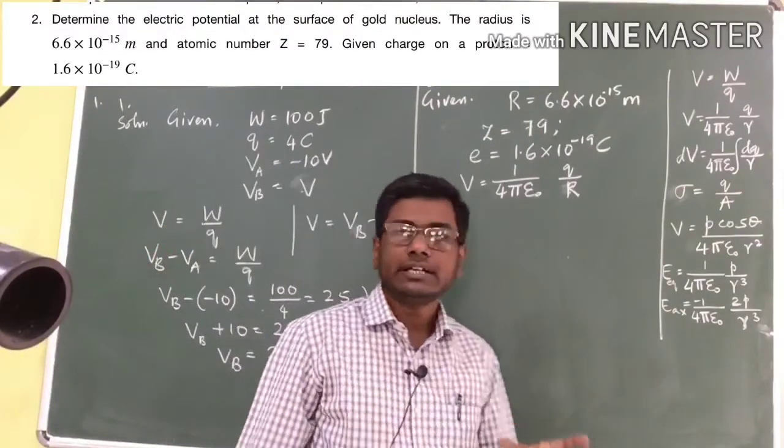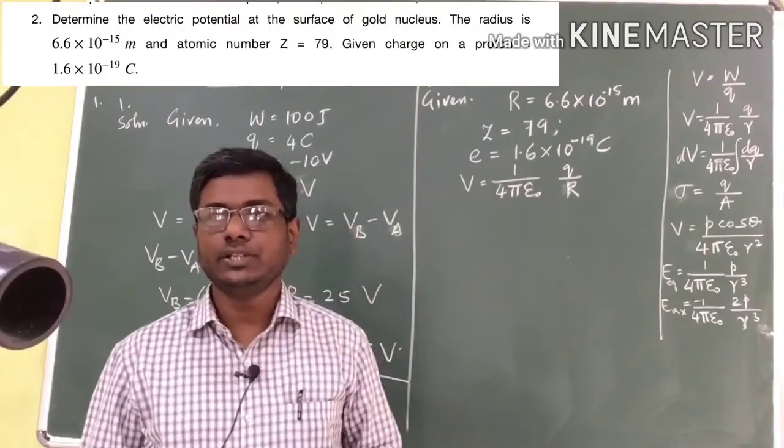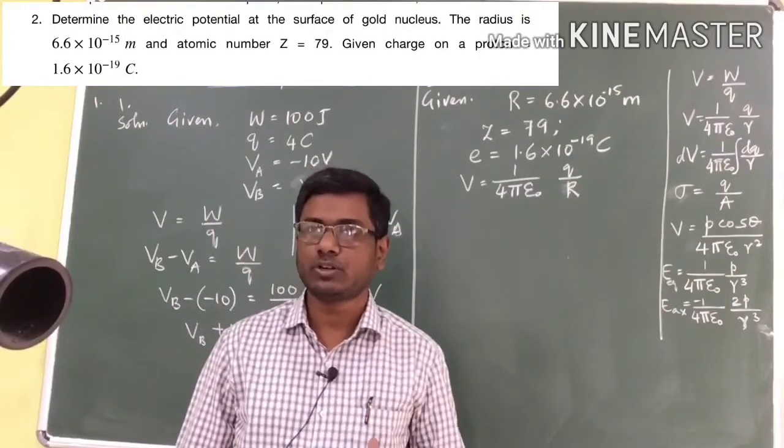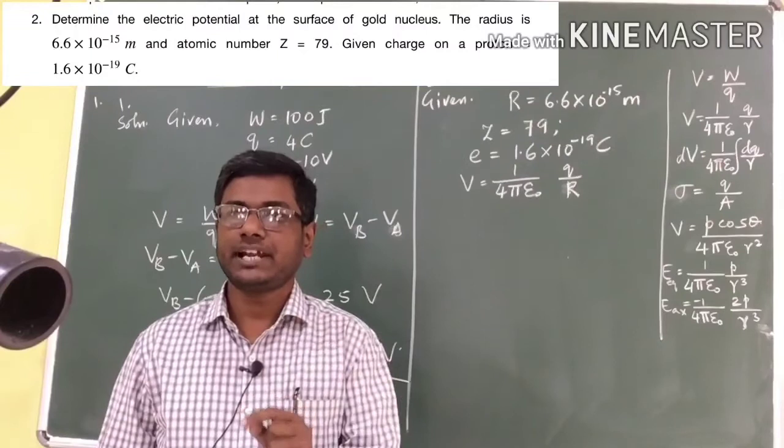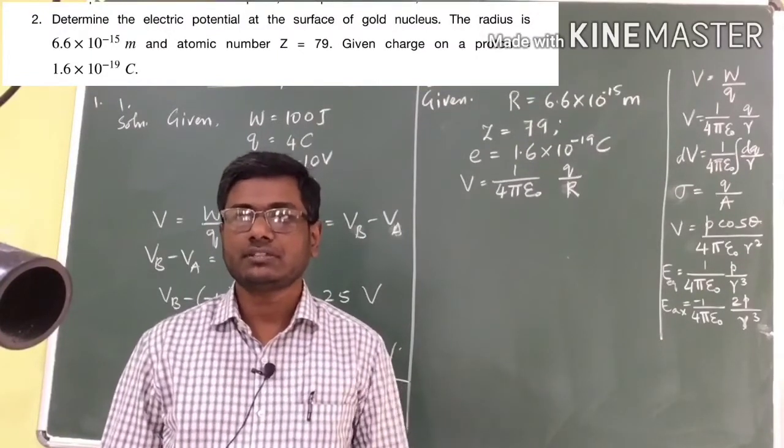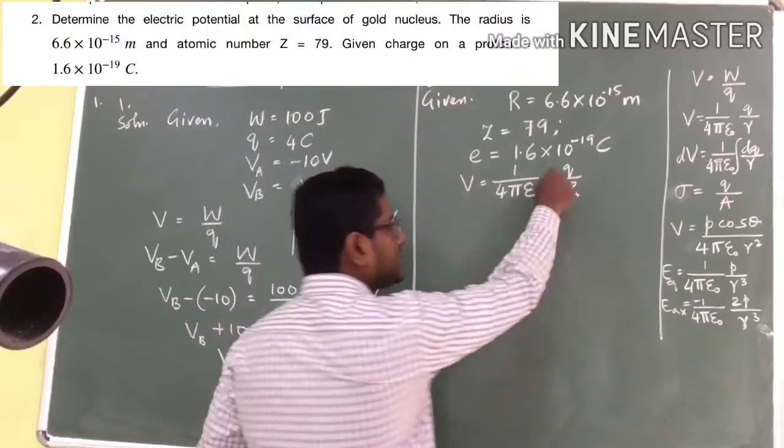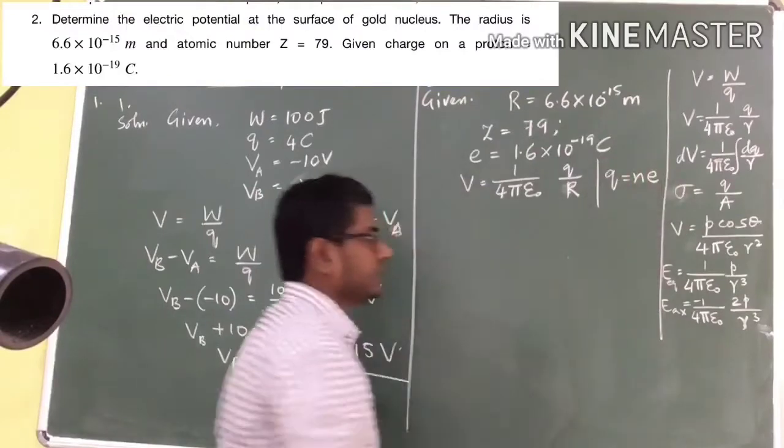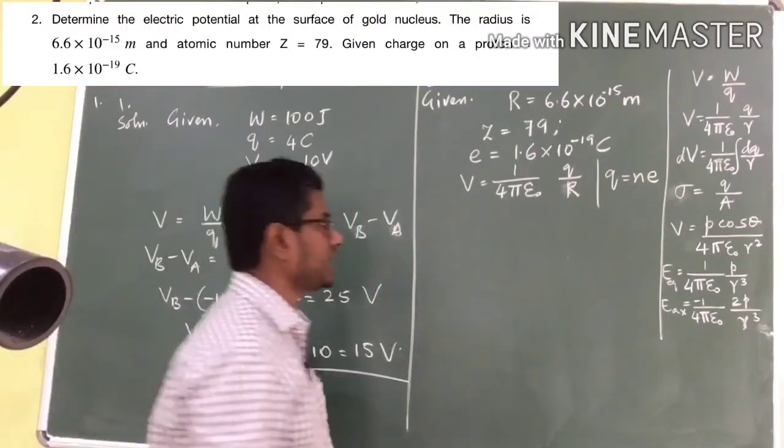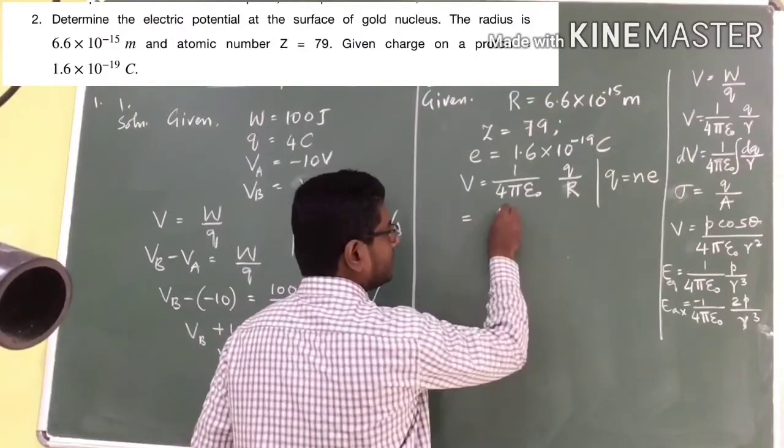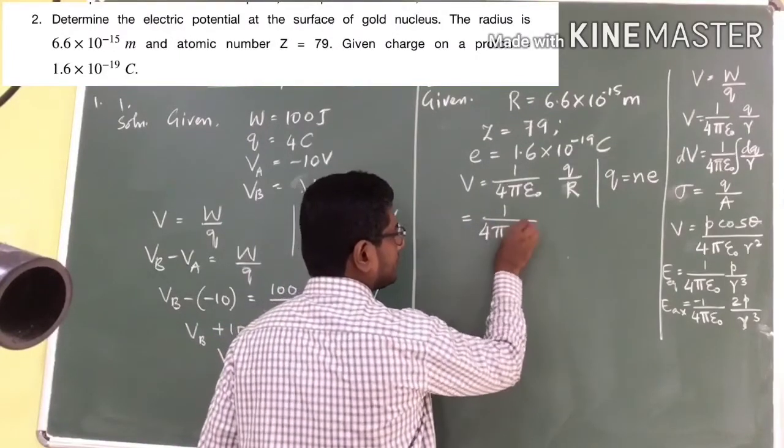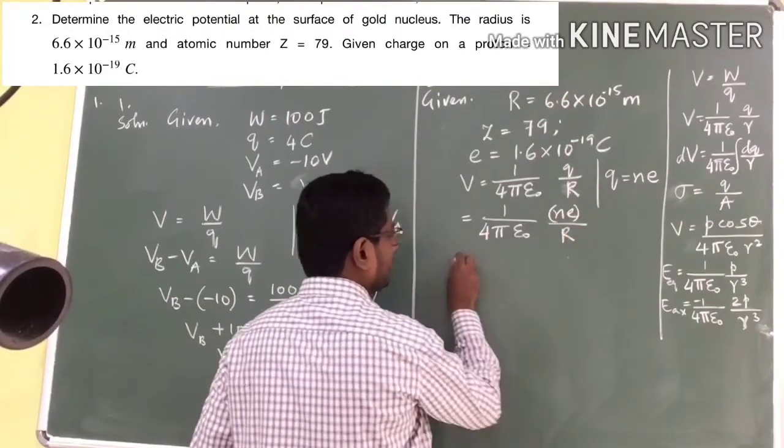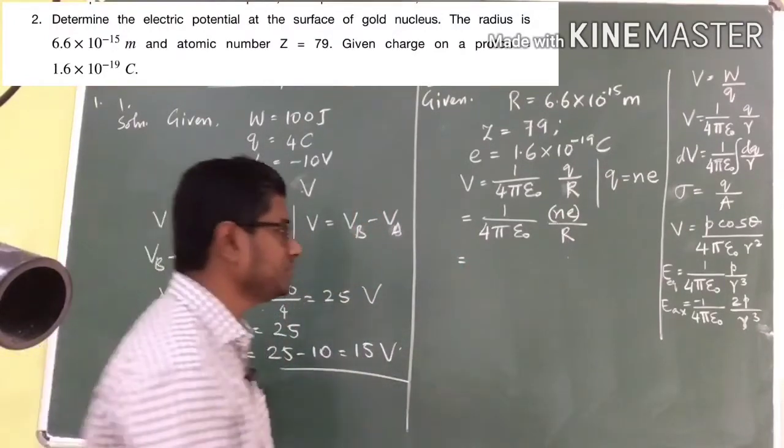Because when we talk of the nucleus, the nucleus contains protons and neutrons. If we have protons, the number of protons multiplied by charge on each proton will give us the total charge of that nucleus. I can replace this Q just by N into E. That is again from the first chapter. That is the quantization of charge. I am going to rewrite the same equation with that 4 pi epsilon naught. Instead of Q, I am going to use NE divided by R. Now, all the quantities are known. I can just substitute the values. I will get the answer.